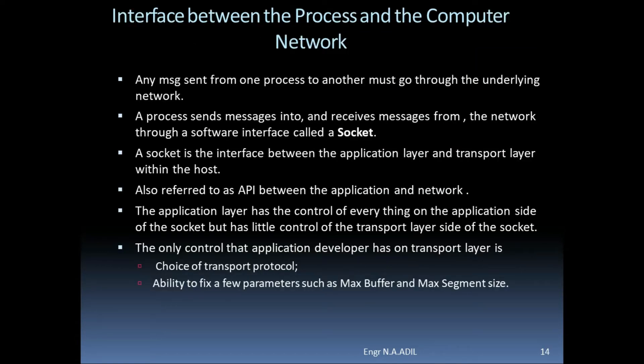Interface between the process and the computer network: any message sent from one process to another must go through the underlying network. A process sends and receives messages through a software interface called a socket. A socket is the interface between the application layer and transport layer within the host, also referred to as the API between the application and the network.